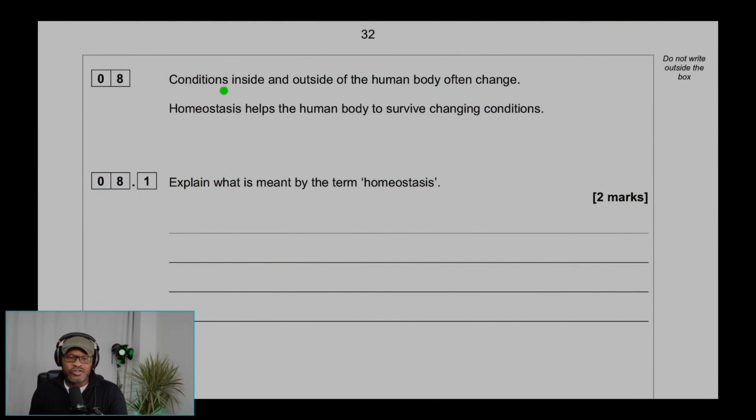Question 8: Conditions inside and outside of the human body often change. Homeostasis helps the human body to survive changing conditions. 8.1: Explain what is meant by the term homeostasis. This is the regulation or control or maintenance of internal conditions for optimum conditions for cells or enzyme activity, and that's why it's two marks.